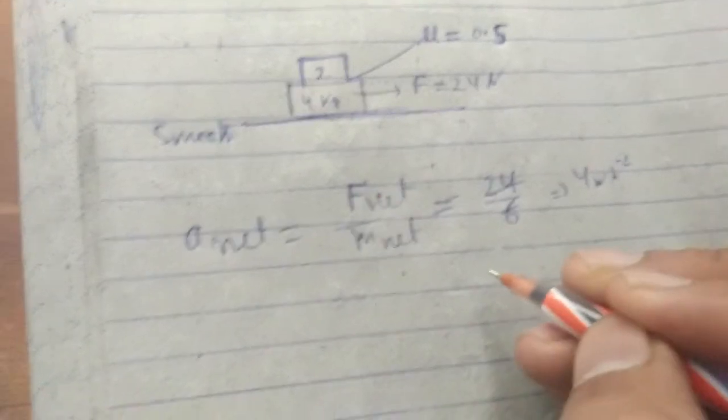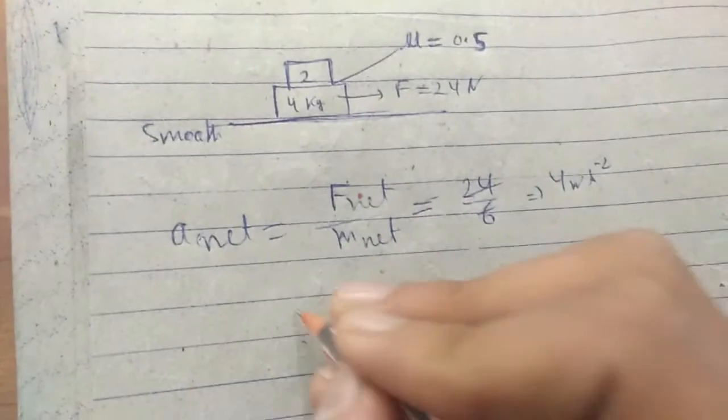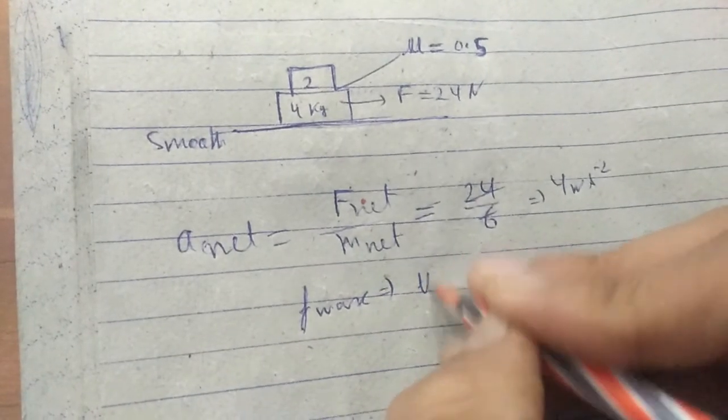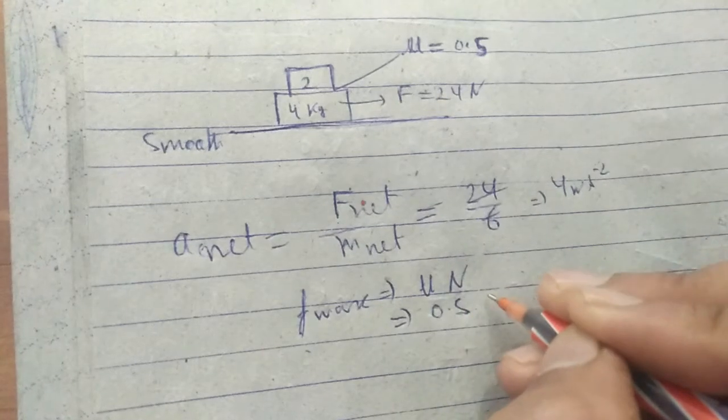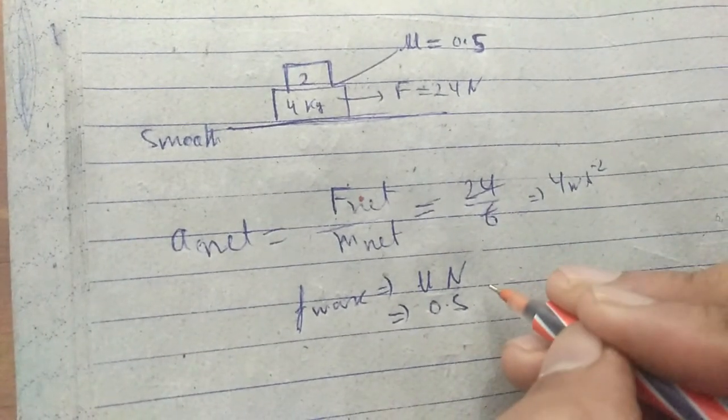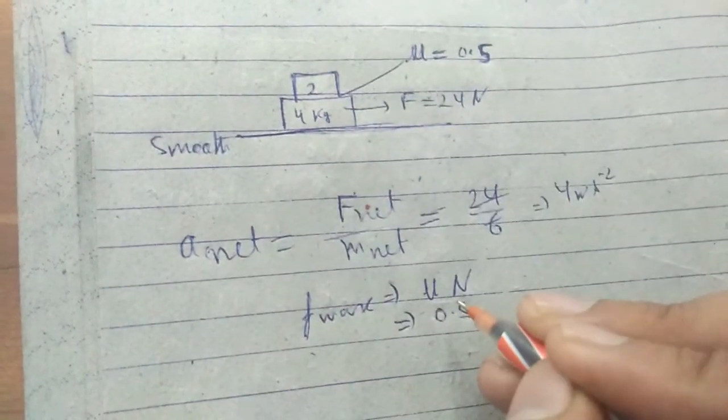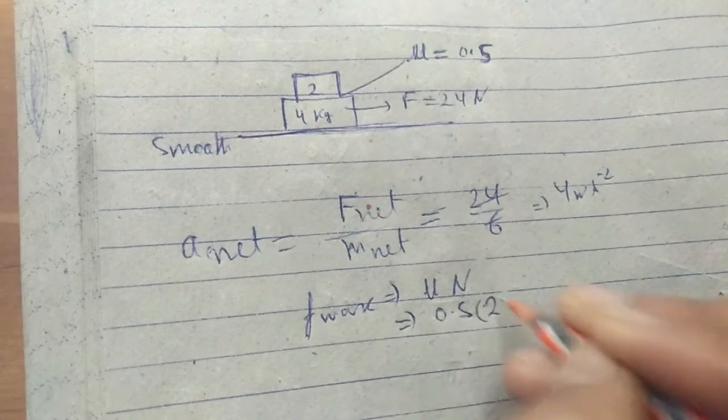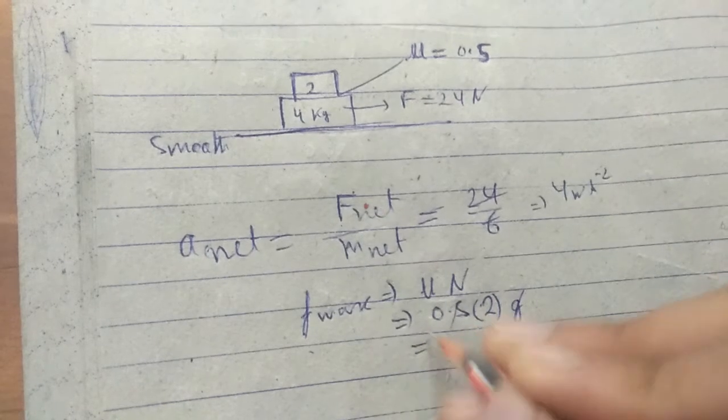Now we need to find the maximum value of friction. What is the maximum value of friction that can be in this situation? F max is equal to μ into n. μ is 0.5, and normal reaction - we have to observe this block for this situation. Normal reaction n is equal to mg. Mass is 2 kg, so that will be equal to 10 N.